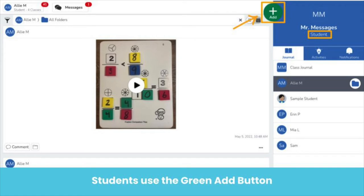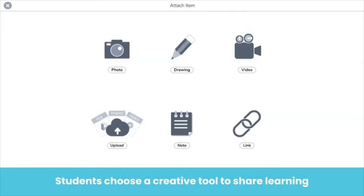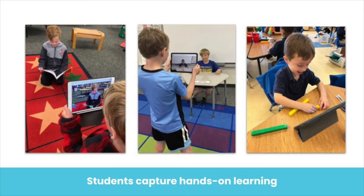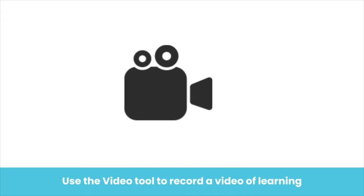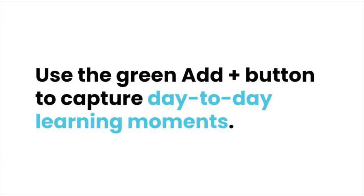Students also have a green add button. This is the student view — notice it says student under the class name. The student view is very similar to the teacher view, with a few differences. When students tap the green add button, they don't see the teacher menu; they go right to the learning tools to create their post. Students use the video, camera, microphone, or drawing tools to capture the learning taking place in the classroom, or they can capture a video of their learning, and so much more. The green add button is perfect for quickly capturing day-to-day learning moments.